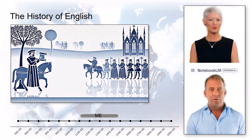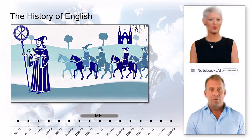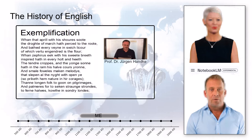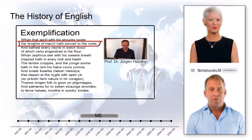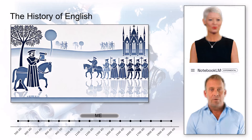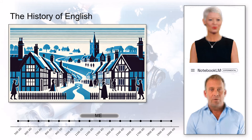The Canterbury Tales, his masterpiece, is like a time capsule — not only written in Middle English, but showing off all the different dialects people were speaking back then. And to get a sense of what it sounded like, picture the accent of the time: 'Whan that Aprill with his shoures soote, the droghte of March hath perced to the roote.' That's how the Canterbury Tales begins.